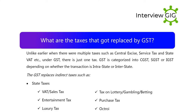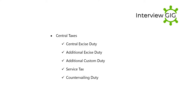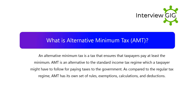Unlike earlier when there were multiple taxes such as central excise, service tax, and state VAT, under GST there is just one tax. GST is categorized into CGST, SGST, or IGST depending on whether the transaction is intrastate or interstate. The GST replaces indirect taxes such as state taxes: sales tax, entertainment tax, luxury tax, tax on lottery/gambling/betting, purchase tax, and octroi; and central taxes: central excise duty, additional excise duty, additional custom duty, service tax, and countervailing duty.